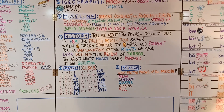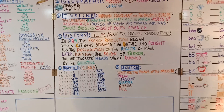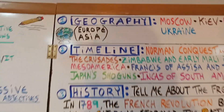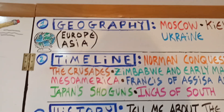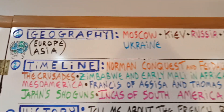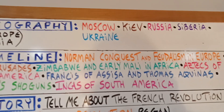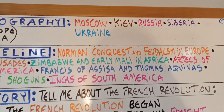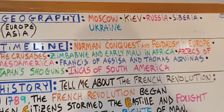Article 2, week 11. For our geography, we'll be going up into Europe and Asia. We'll be in Moscow, Kiev, Russia, Siberia, and the Ukraine.